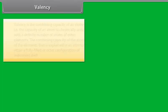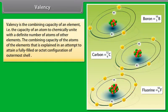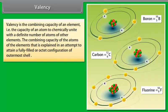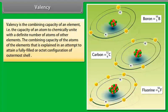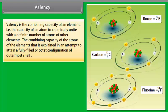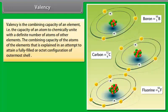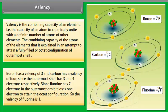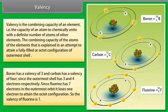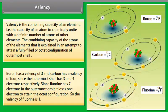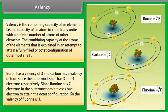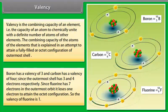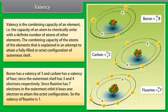Valency. Valency is the combining capacity of an element, that is, the capacity of an atom to chemically unite with the definite number of atoms of other elements. The combining capacity of atoms of the elements is explained in an attempt to attain a fully filled or octet configuration of outermost shell. Boron has a valency of 3, and carbon has a valency of 4, since the outermost shell has 3 and 4 electrons respectively. Since fluorine has 7 electrons in the outermost orbit, it loses 1 electron to attain the octet configuration. So, the valency of fluorine is 1.